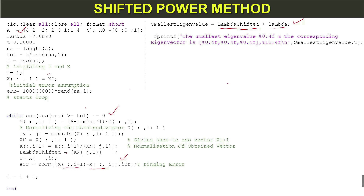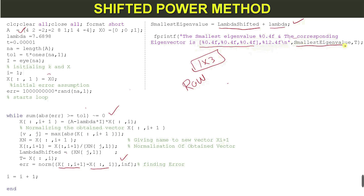After convergence, we print the smallest eigenvalue and the corresponding eigenvector. The eigenvector is a 3x1 column, but it is printed as a 1x3 row matrix. Here you can see the smallest eigenvalue value and the normalized eigenvector.